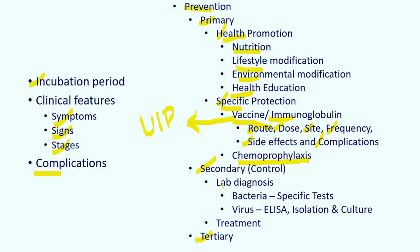Then secondary prevention — control and lab diagnosis. For bacteria, we may use antigen detection or antibody detection tests. Antibody tests will be ELISA or DNA assays and RT-PCR, isolation and culture, and treatment. Treatment will be a specific drug.